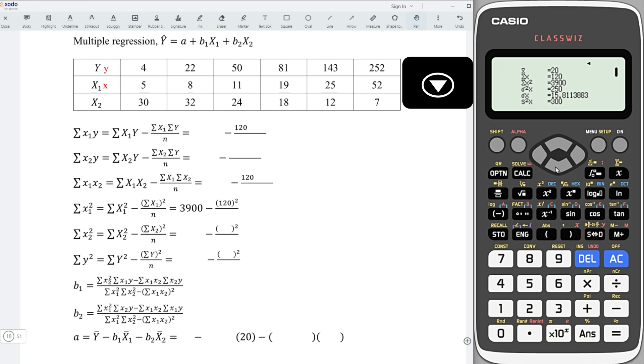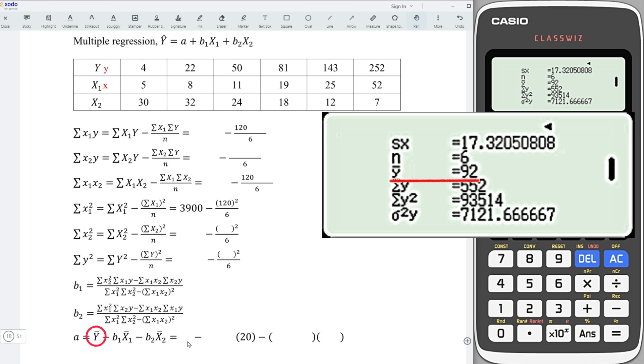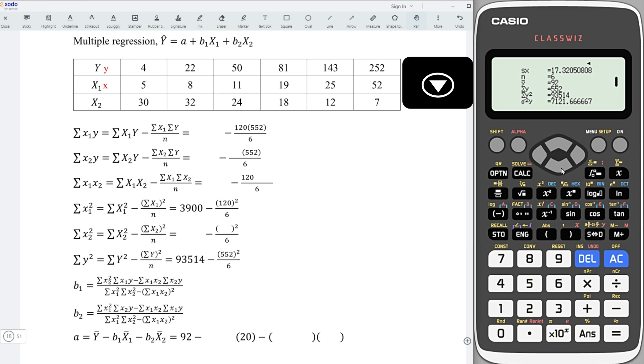Press on the down button, the n value, mean of y, summation y, y-square, down again to obtain summation xy.